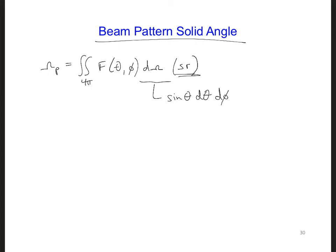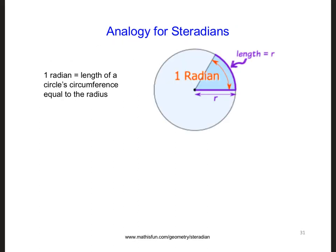So d-omega is sine theta d-theta d-phi. To understand steradians and omega, let's consider an analogy. Here's the analogy. What is the circumference of a circle?